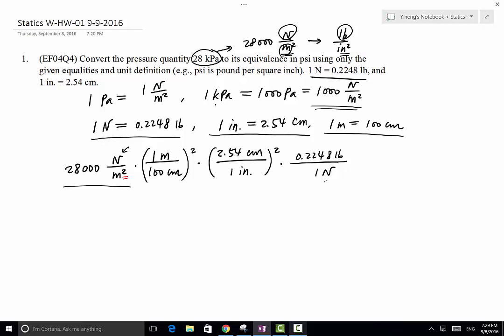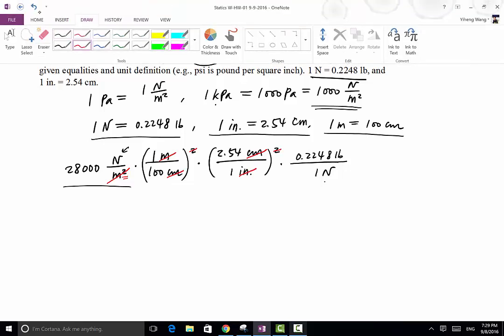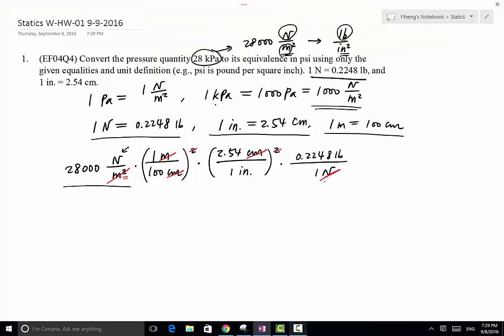So as a result, as you can see, we can cancel out meters squared from here, centimeter squared from here. Sorry, not inch, but newton and newton here. The remaining unit left will be pound per inch squared.